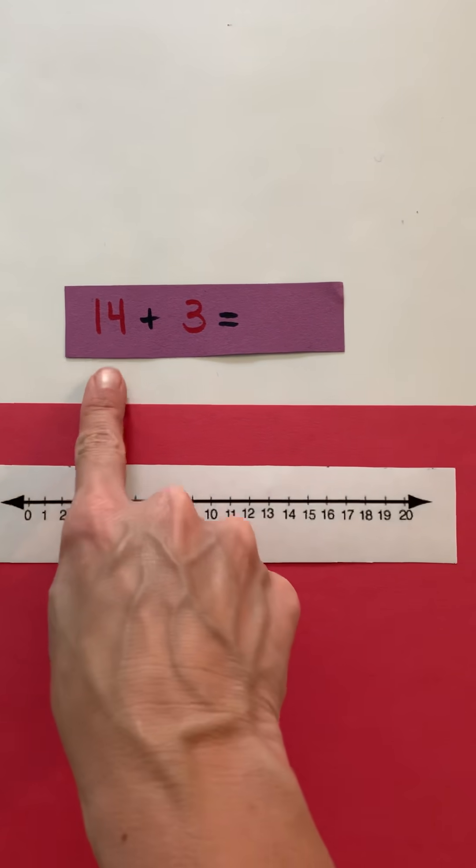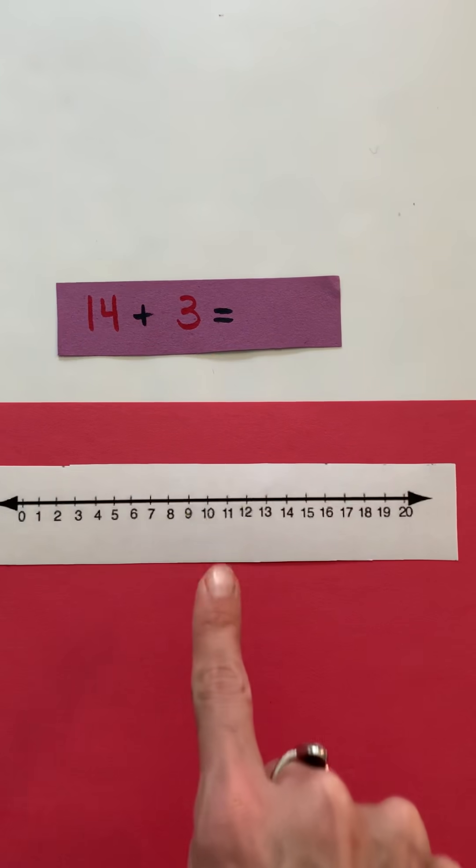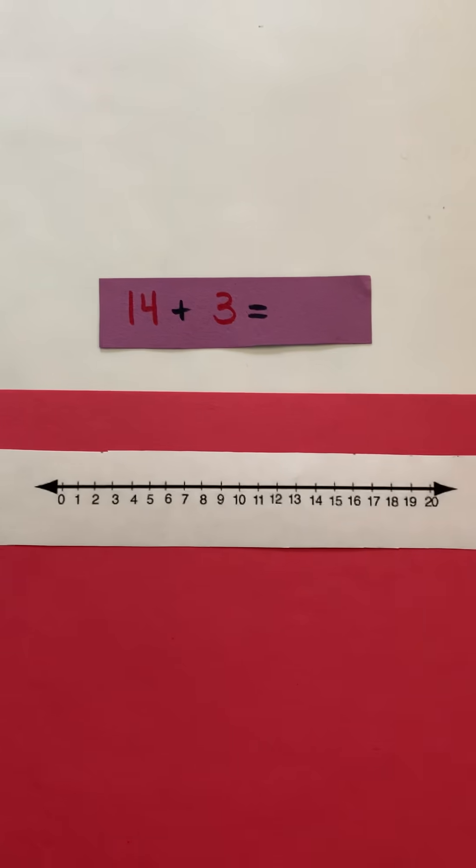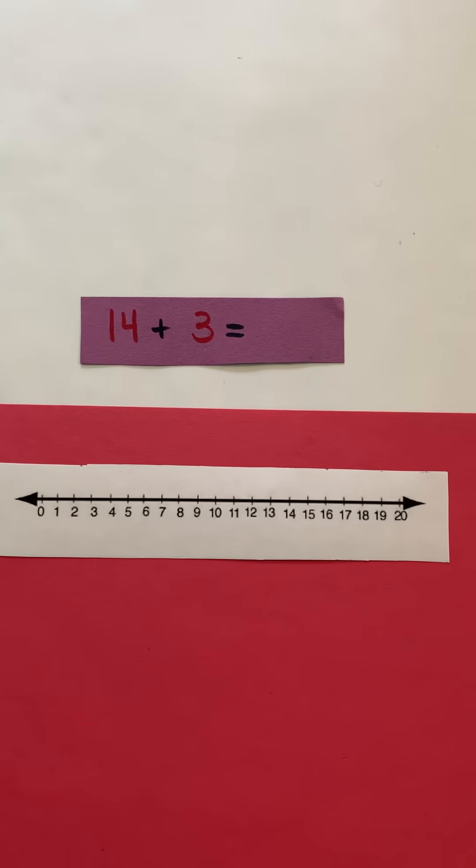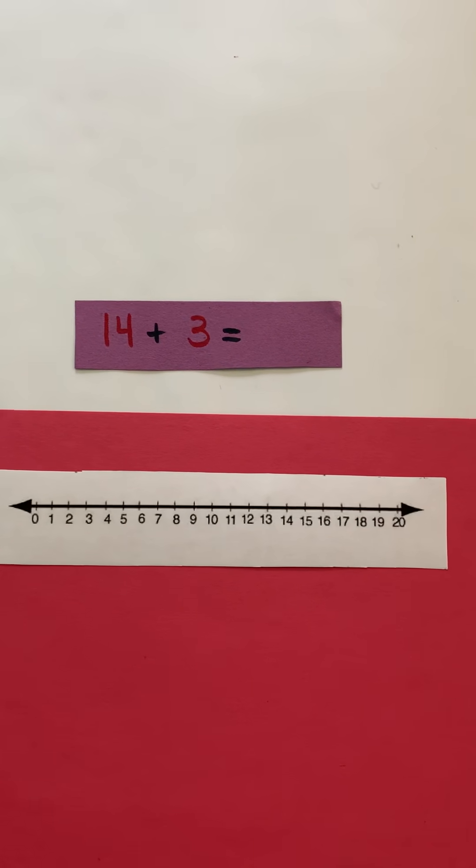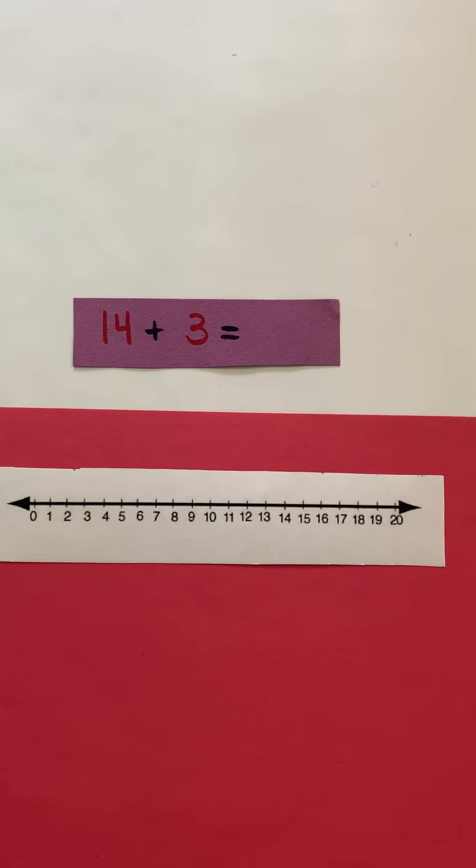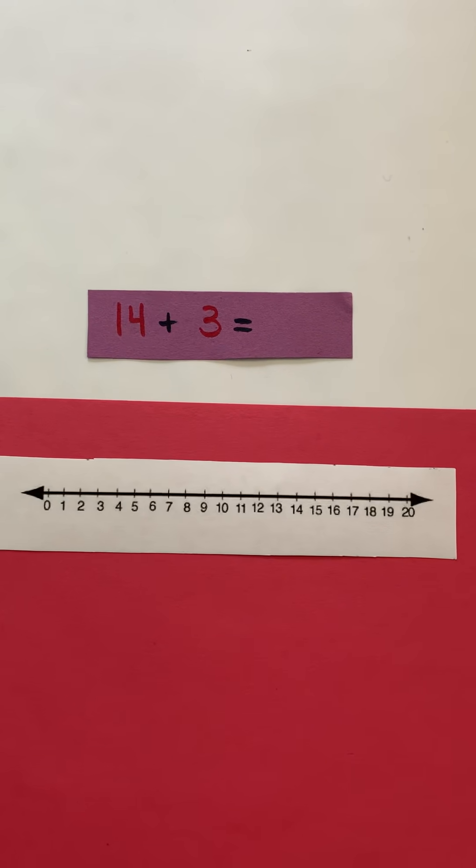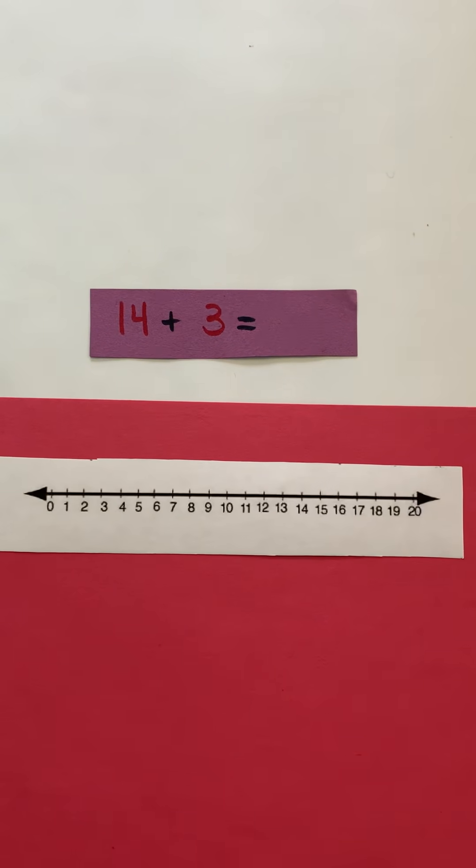This video will focus on adding a two-digit addend plus a one-digit addend using a number line. Earlier this year you've probably used a number line adding one-digit plus one-digit. Now we're going to extend that to adding two-digit plus one-digit, and we're even going to move into you creating your own number line.